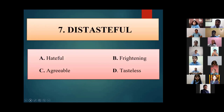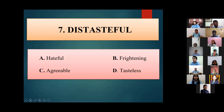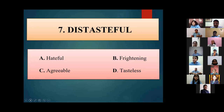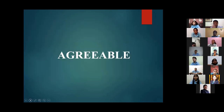Next word for Neha Bhardwaj: 'Distasteful'. She answers 'agreeable, option C' — absolutely perfect. Distasteful refers to someone who is rigid, not able to agree on points, always ready to fight or go against, so the opposite is agreeable.